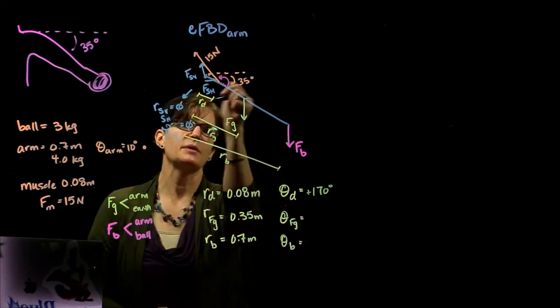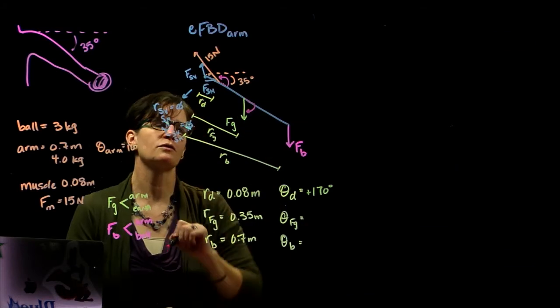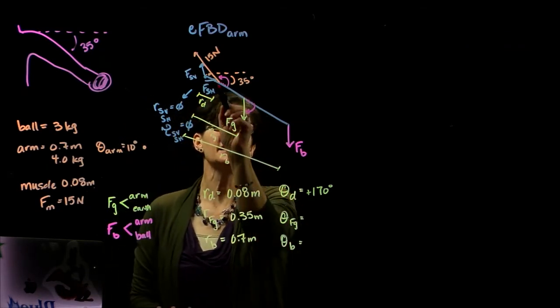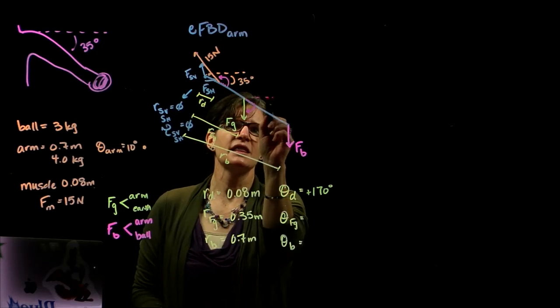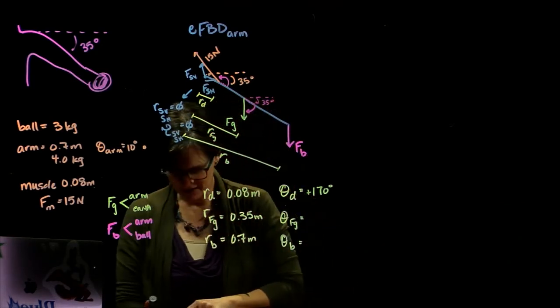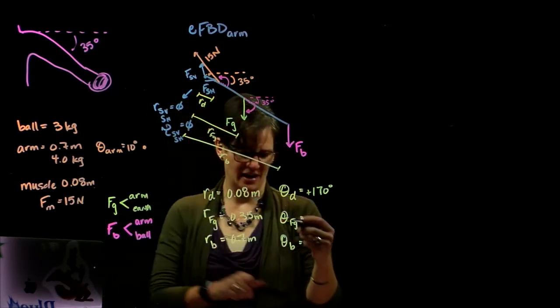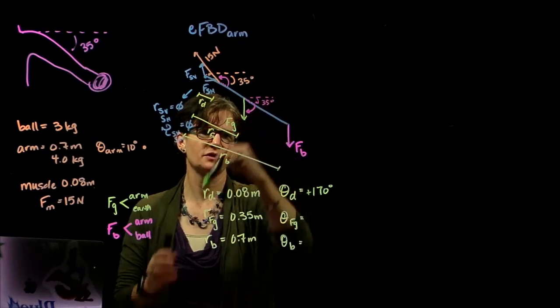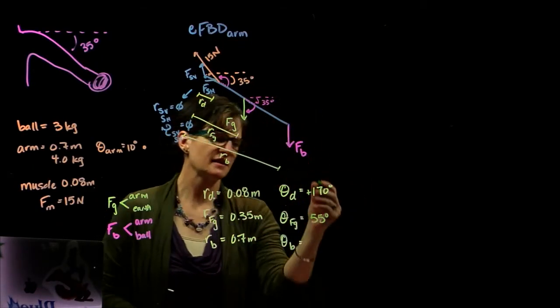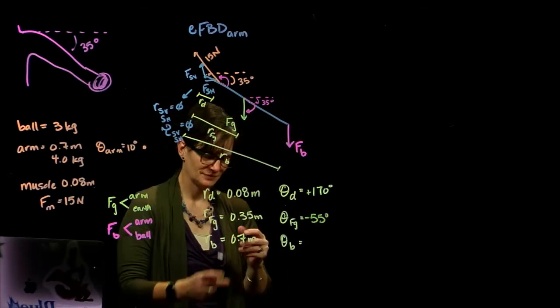The force of gravity. We extend our radius and curl to the force. Now what is that angle? Well, at this angle is 35, this angle is 35 degrees, and 90 minus 35 is 55. So we know the angle between the force of gravity and the radius is 55 degrees, and that's in the clockwise direction, so it's negative.